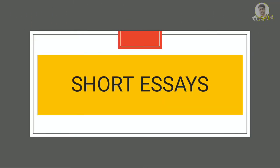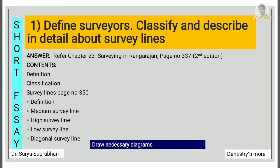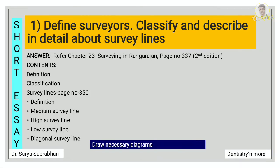Moving on to the short essays. Define surveyors, classify and describe in detail about survey lines. For this refer chapter 23, surveying, in Rangarajan, page number 337. First define what is surveyor, then give a classification of surveyors, then write about the survey line. First give the GPT definition for survey line, then write the four types of survey lines: medium, high, low, and diagonal. Also draw the necessary diagrams.